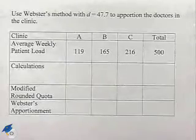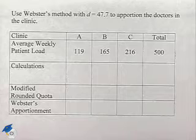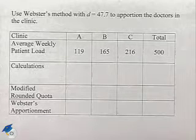Now let's consider Webster's method. Use Webster's method with D equals 47.7 to apportion the doctors in the clinic.